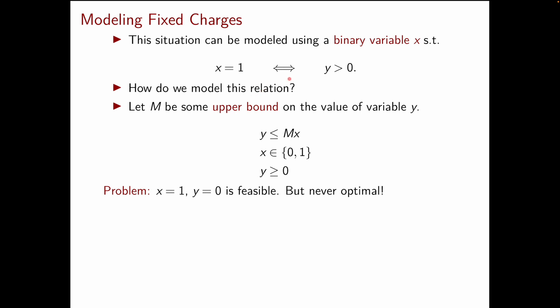So everything we have to do is encode this if and only if with integer programming. To do so we will need some upper bound capital M on the value of variable y. You can think of it as an upper bound on the amount of your good that you will ever produce.